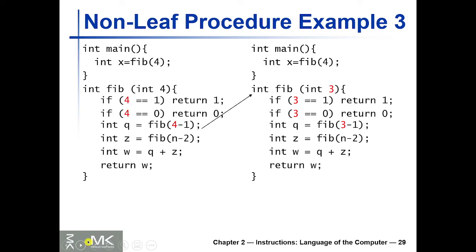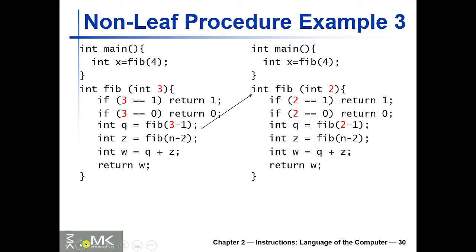Let's explore a recursive trace in C to see how complicated it is. We're computing Fibonacci of 4, which equals 3. We start by calling Fib(4). Since 4 ≠ 1 and 4 ≠ 0, we don't return early. So we compute int q = Fib(4-1) = Fib(3). Since 3 ≠ 1 and 3 ≠ 0, we call again — Fib(2). That's the recursion.